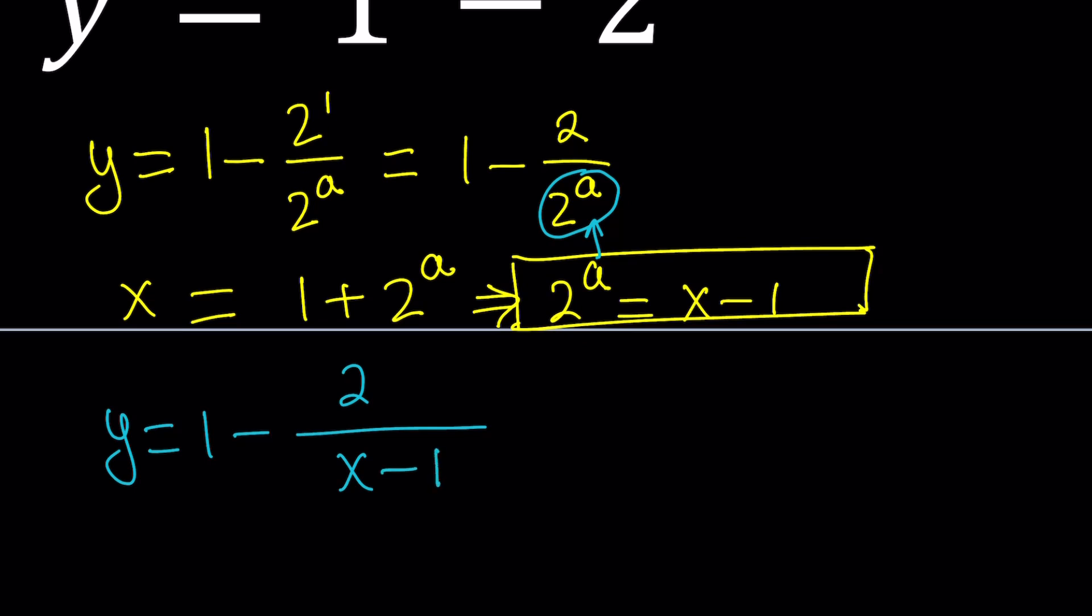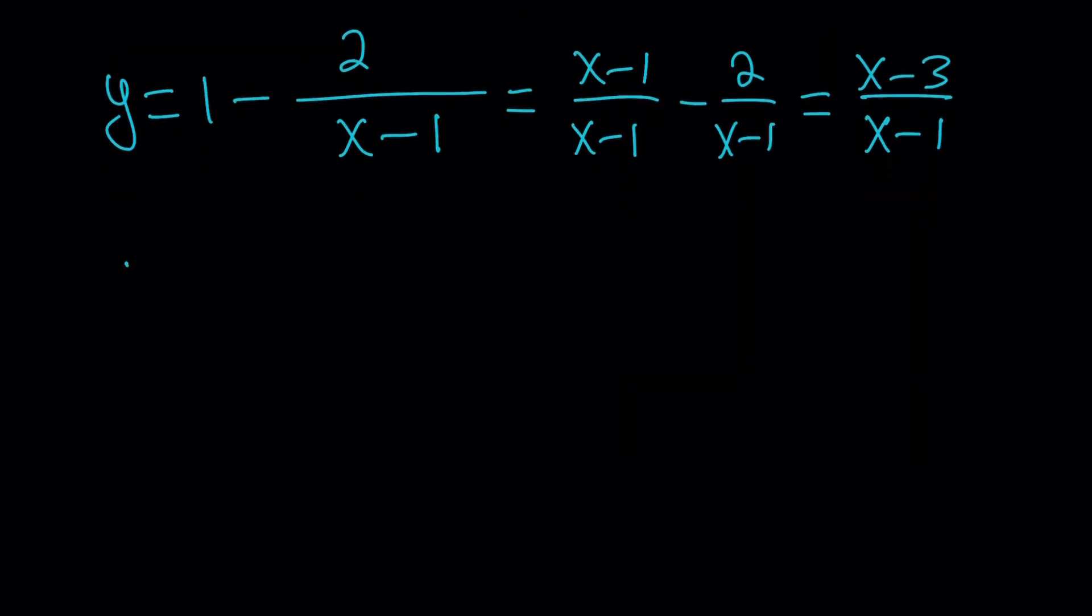So y equals 1 minus 2 over 2 to the power a, which can be written as x minus 1. Now notice that we got rid of the a, and now y is expressed in terms of x. That was the goal. But let's simplify this a little bit. Let's make a common denominator. This is like x minus 1 over x minus 1 minus 2 over x minus 1. Obviously, x does not equal 1. And then from here we get x minus 1 minus 2, which is x minus 3 over x minus 1. So we made a common denominator, and we got y equals x minus 3 over x minus 1.